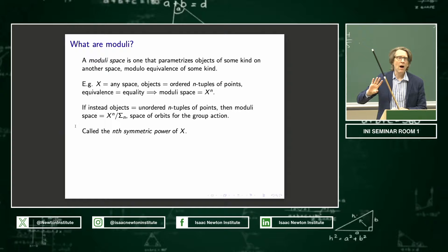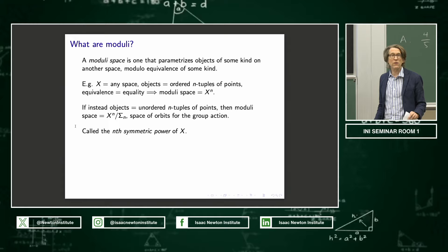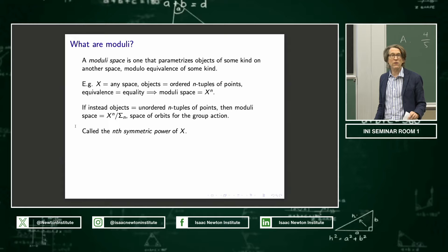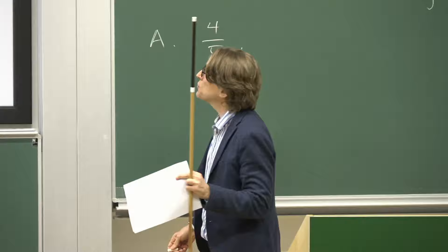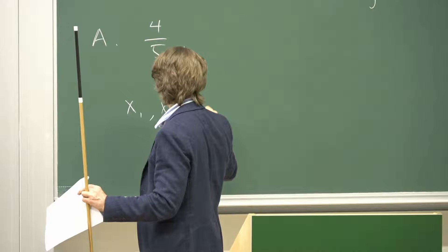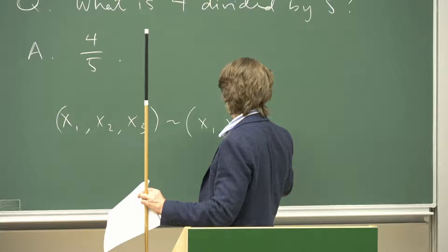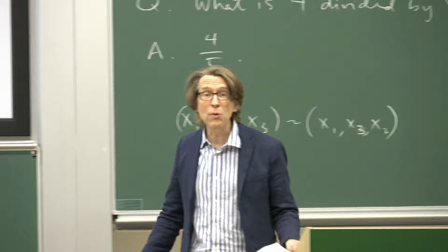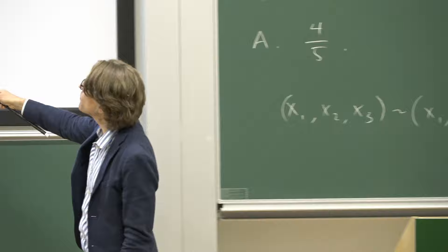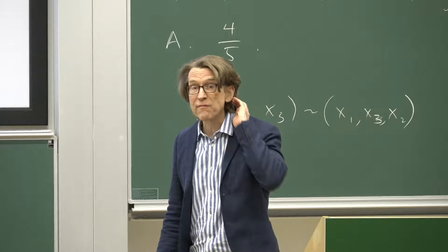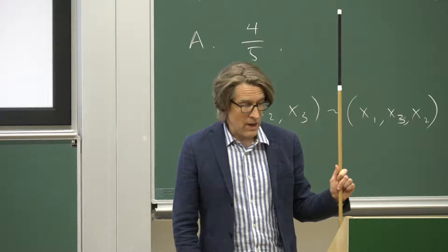A slightly more interesting example is to consider the objects which are unordered n-tuples of points. The easiest way to make sense of that is to introduce a different equivalence on the Cartesian power — saying that a triple like (x1, x2, x3) is equivalent to (x1, x3, x2), and similarly for all permutations. So what we see is that a group, the group of permutations called the symmetric group, is acting on this space. What we want is the space of all orbits or equivalence classes for the group action. If X has a topology, we can give that the quotient topology. This is called the n-th symmetric power.